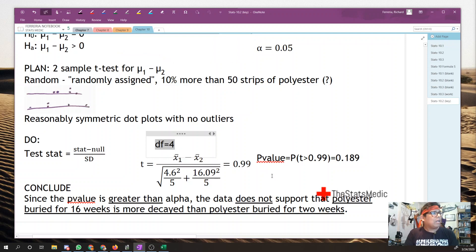Conclusion. Since the p-value is greater than alpha, the data does not support that polyester buried for 16 weeks is more decayed than polyester buried for 2 weeks. Now, I know what you're saying. The numbers seem smaller for group 2.